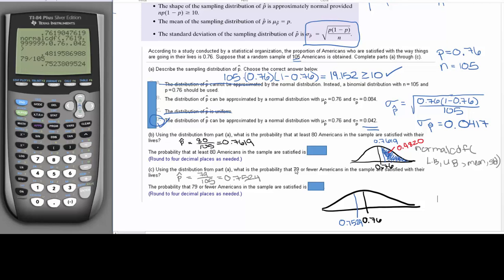And this is saying the probability that 79 or fewer. Or fewer is going to mean the area to the left.